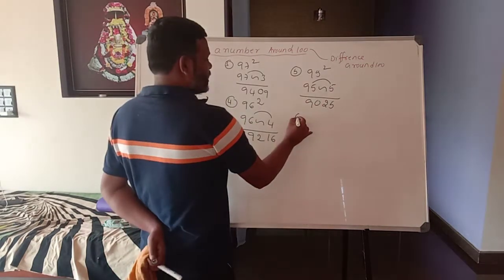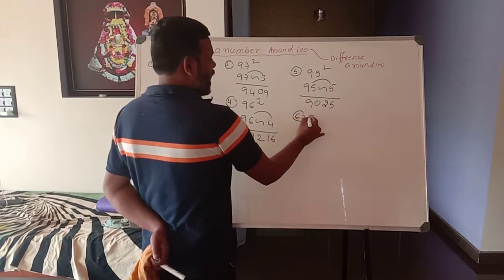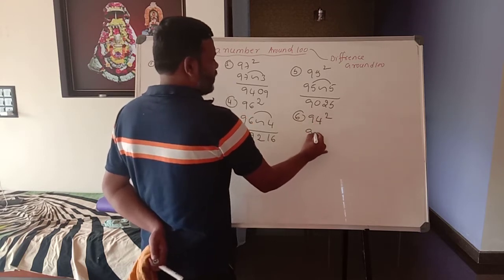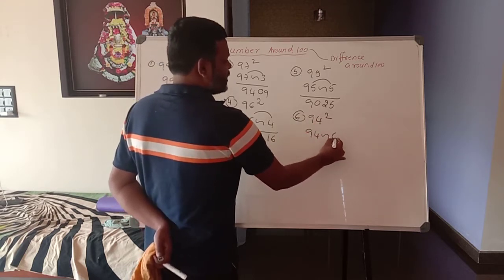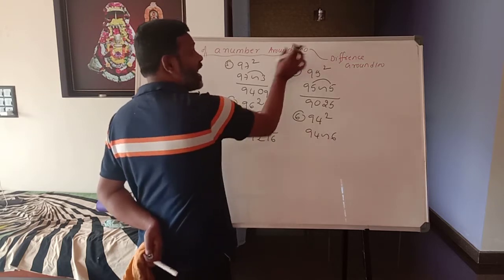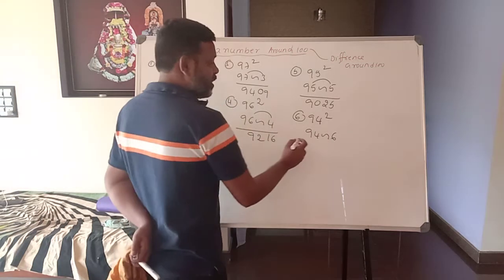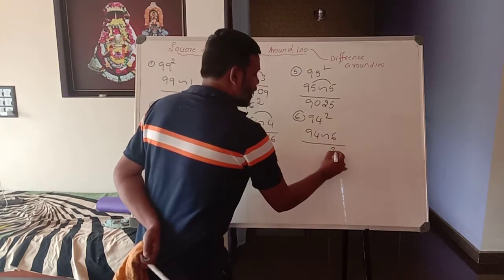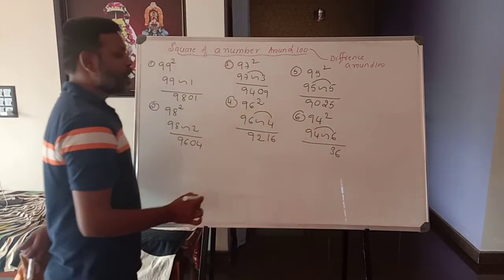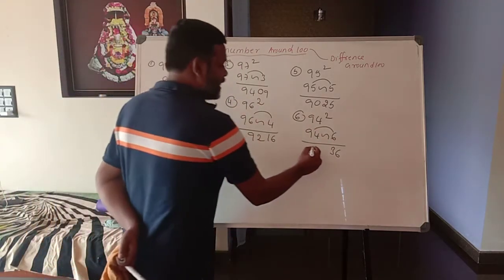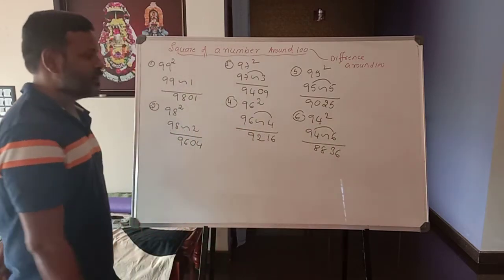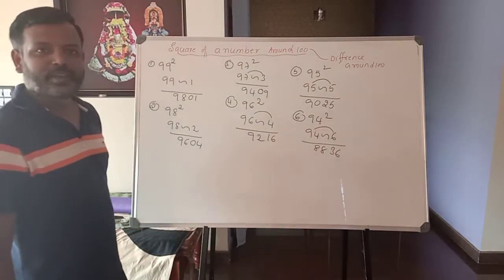Now the 6th one is 94 squared. 94 with a difference of 6. This difference is taken from 100. 6 squared is 36. 94 minus 6 is 88. So the answer is 8836. Is it clear?